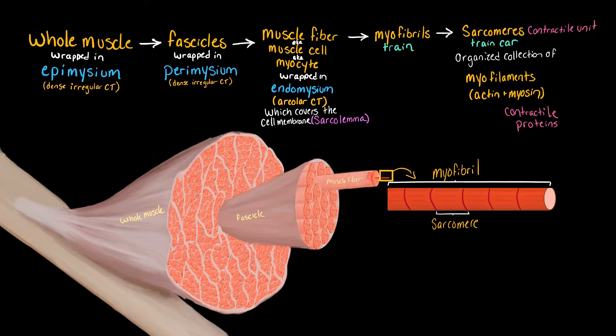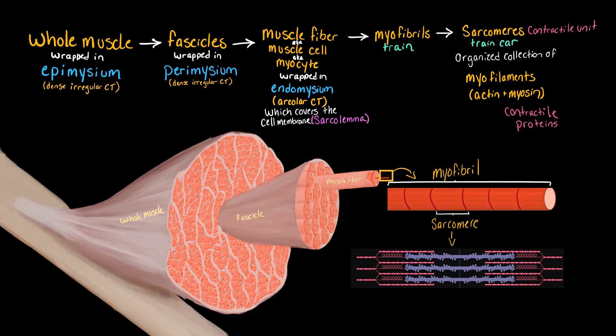Actin and myosin are the contractile proteins. Now, I'm not going to go too much into the anatomy of the sarcomere itself. I have another video about that. It is called contracted versus relaxed sarcomeres. I'll put that in the description. For now, I think it's enough to know that the sarcomere has actin, which is the thin filament, and myosin, which is the thick filament.